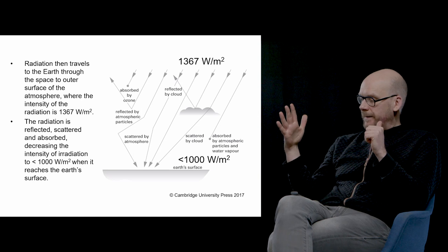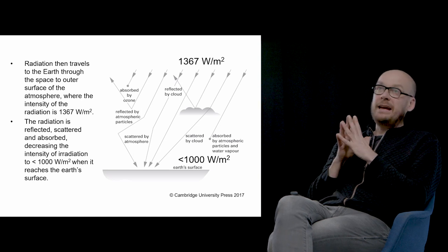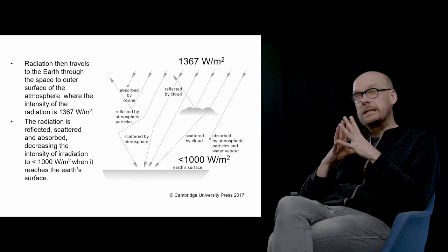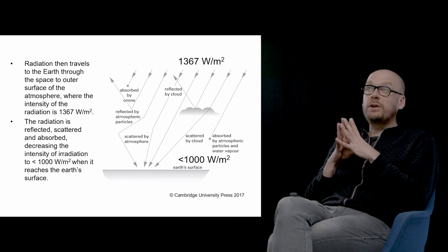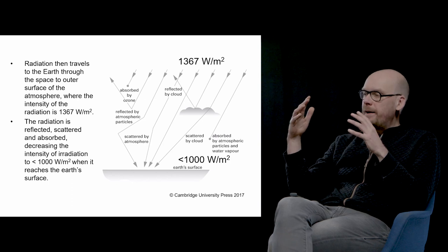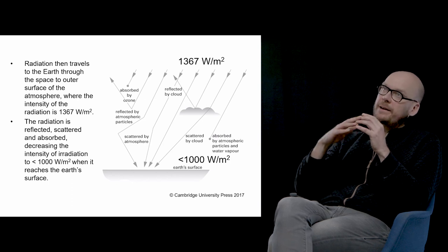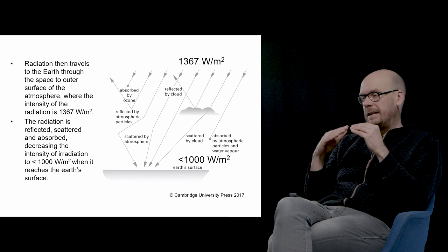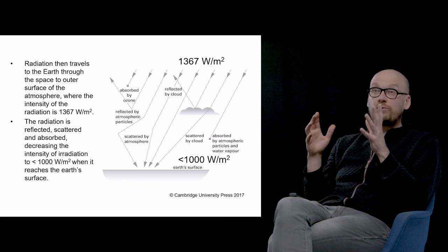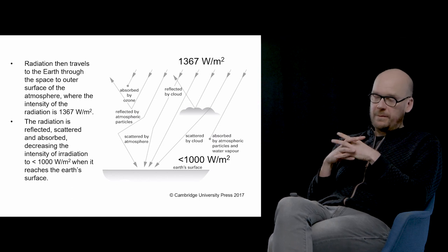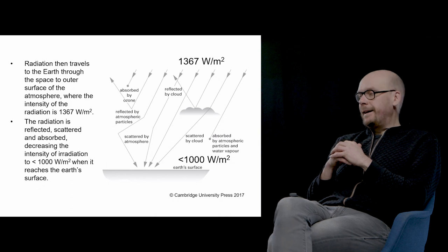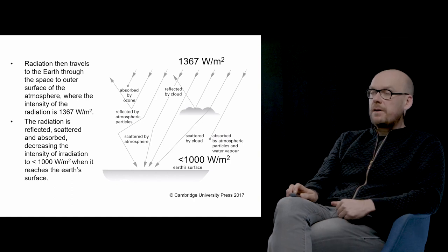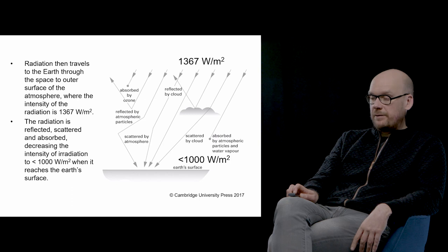Radiation travels from the hot surface of the sun through space to the outer surface of the atmosphere, where the intensity equals 1367 watts per square meter. This is also called the solar constant. When the radiation passes through the atmosphere to the surface of the earth, it is reflected, scattered, and absorbed, decreasing the intensity to 1,000 watts per square meter at clear conditions. This is roughly the maximum what we can utilize in different applications.